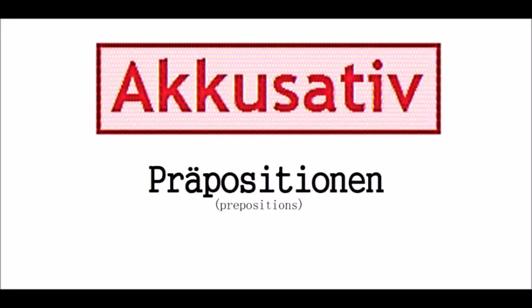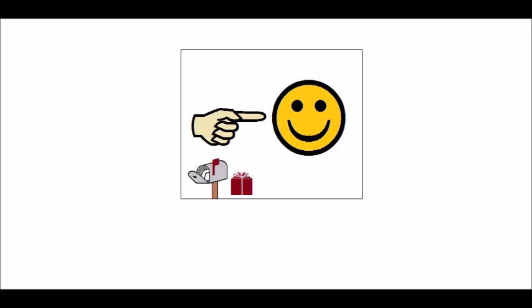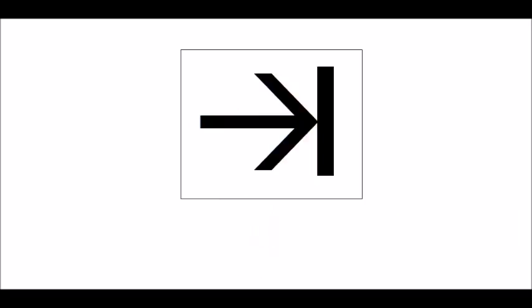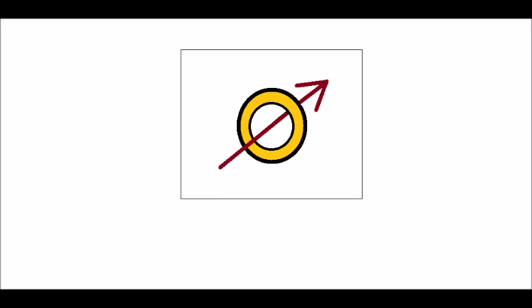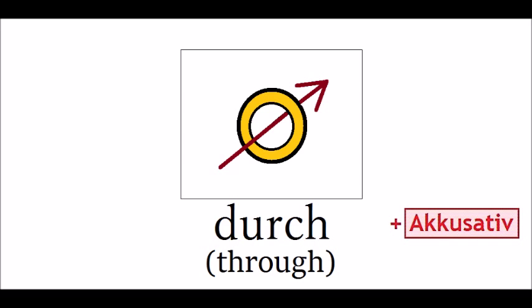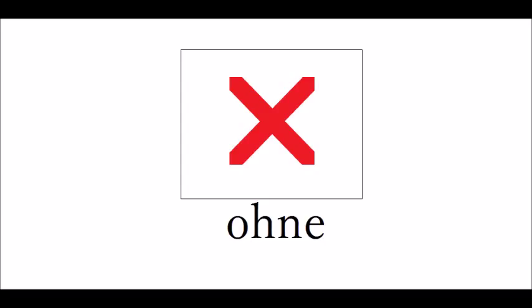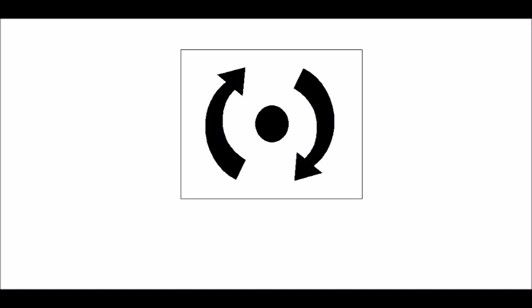We're starting with the accusative ones. This picture shows a letterbox and a present, and a finger pointing to a happy face — it shows the preposition 'für', which means 'for'. This is an arrow that stops at a wall — it shows the concept of 'gegen', which means 'against'. This ring is pierced by an arrow — it shows the concept of 'durch', which means 'through'. By this red cross, I mean 'ohne', which means 'without'. These arrows make a circular movement with a dot in the middle — it shows the concept of 'um', which means 'around'.